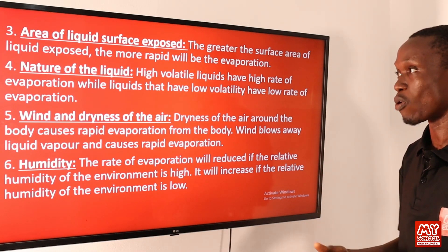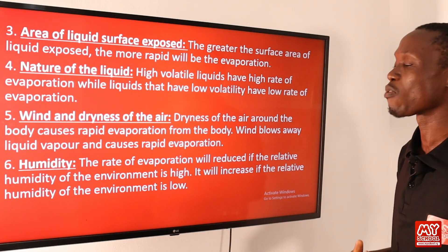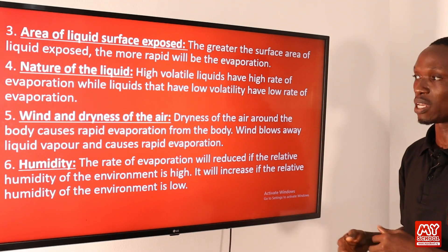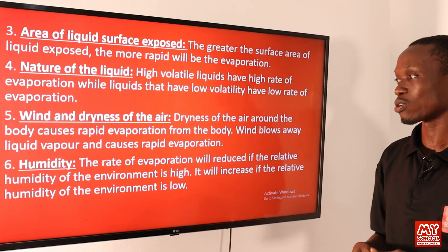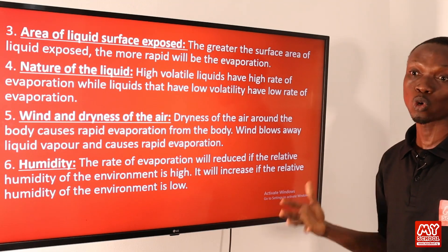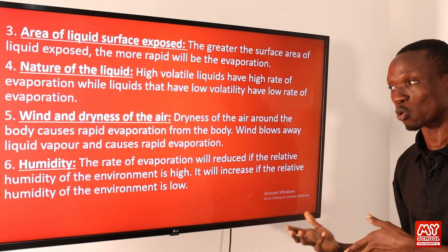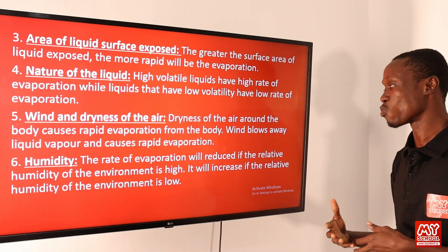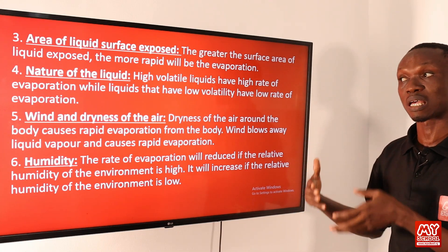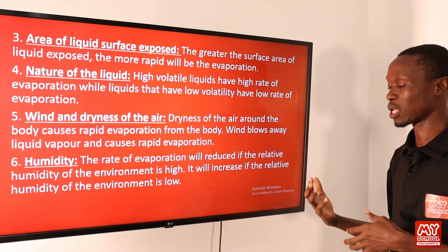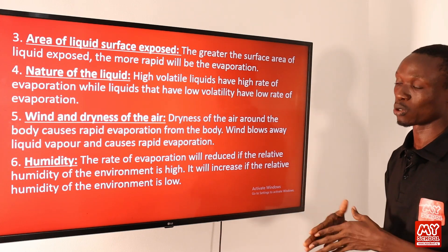The fourth factor is the nature of the liquid. High volatile liquids have a high rate of evaporation, while liquids with low volatility have a low rate of evaporation. Liquids with low boiling points evaporate faster than those with higher boiling points. The fifth factor is wind and dryness of the air — dryness of the surrounding air causes rapid evaporation, and wind blows away liquid vapor, also causing rapid evaporation. Humidity refers to the amount of water vapor in the atmosphere. If the relative humidity is high, the rate of evaporation will be low, and if the humidity is low, the rate of evaporation will be high.